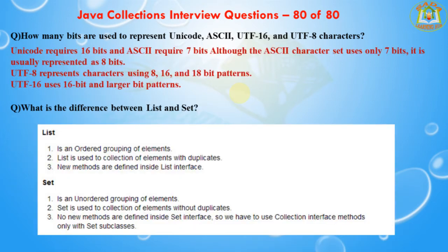The first question is how many bits are used to represent the Unicode, ASCII, UTF-16, and UTF-8 characters. Unicode requires 16-bit and ASCII requires 7-bit. Although ASCII characters use only 7-bit, it is usually represented as 8-bit. UTF-8 represents characters using 8, 16, and 18-bit patterns. UTF-16 uses 16-bit and larger bit patterns. These are the different bits used for different characters.